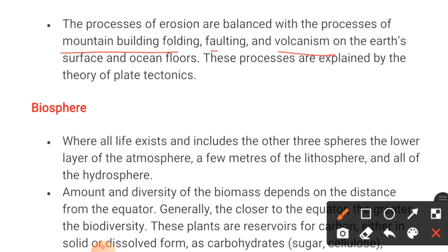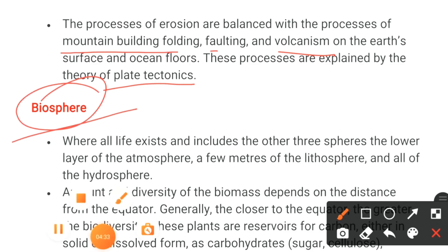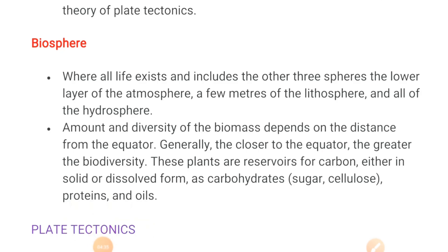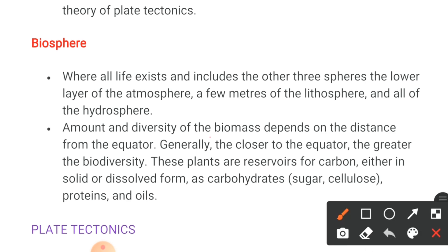The processes of erosion are balanced with the processes of mountain building, folding, faulting, and volcanism on the earth's surface and ocean floors. These processes are explained by the theory of plate tectonics, which will be discussed further. The biosphere is where all life exists and includes the other three spheres — the lower layer of the atmosphere, a few meters of the lithosphere, and all of the hydrosphere. The amount and diversity of biomass depends on distance from the equator; generally the closer to the equator, the greater the biodiversity. Plants are reservoirs of carbon in solid or dissolved form, or as carbohydrates such as sugars, cellular proteins, and oils.